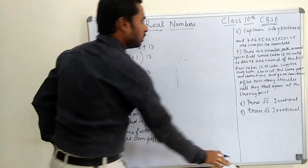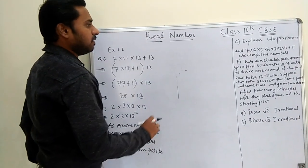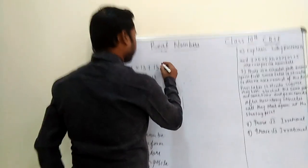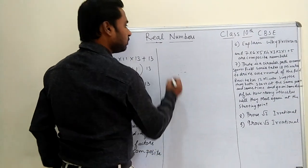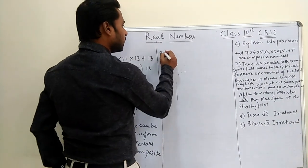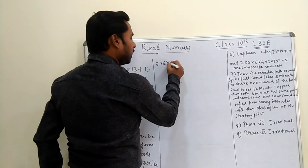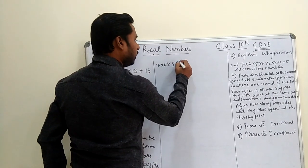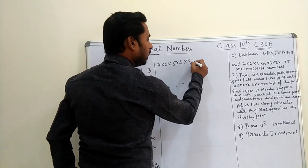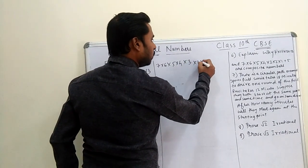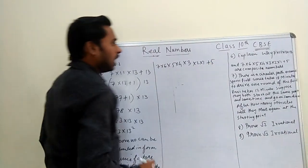Now we move to the second part of the same question: 7 × 6 × 5 × 4 × 3 × 2 × 1 + 5.